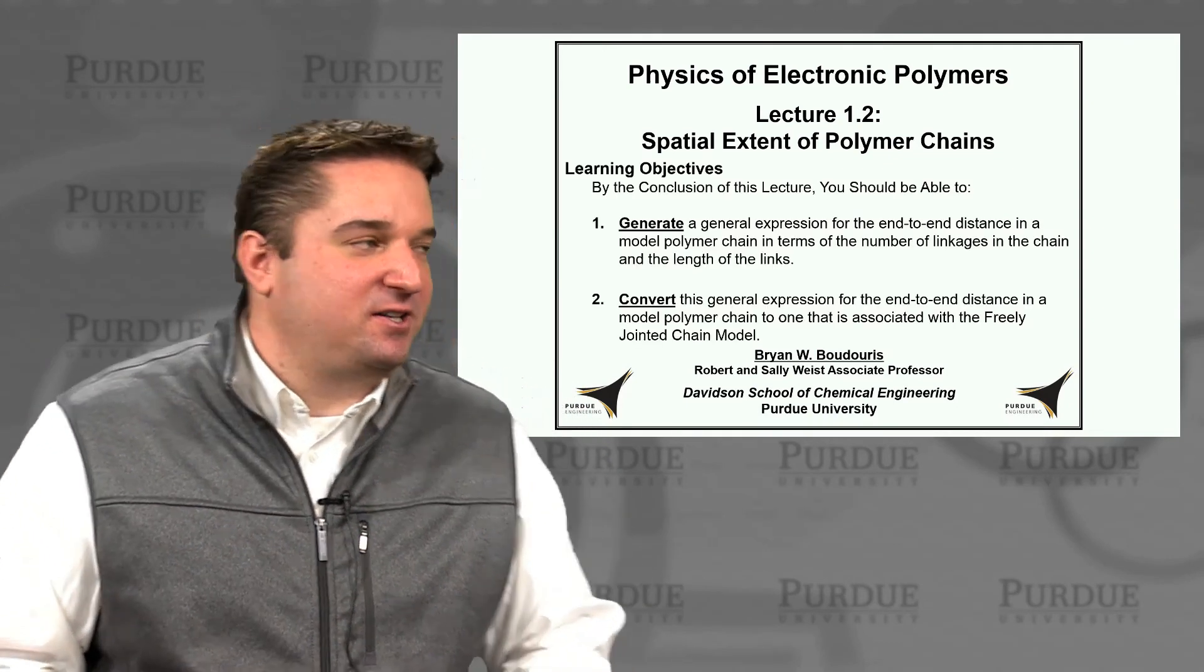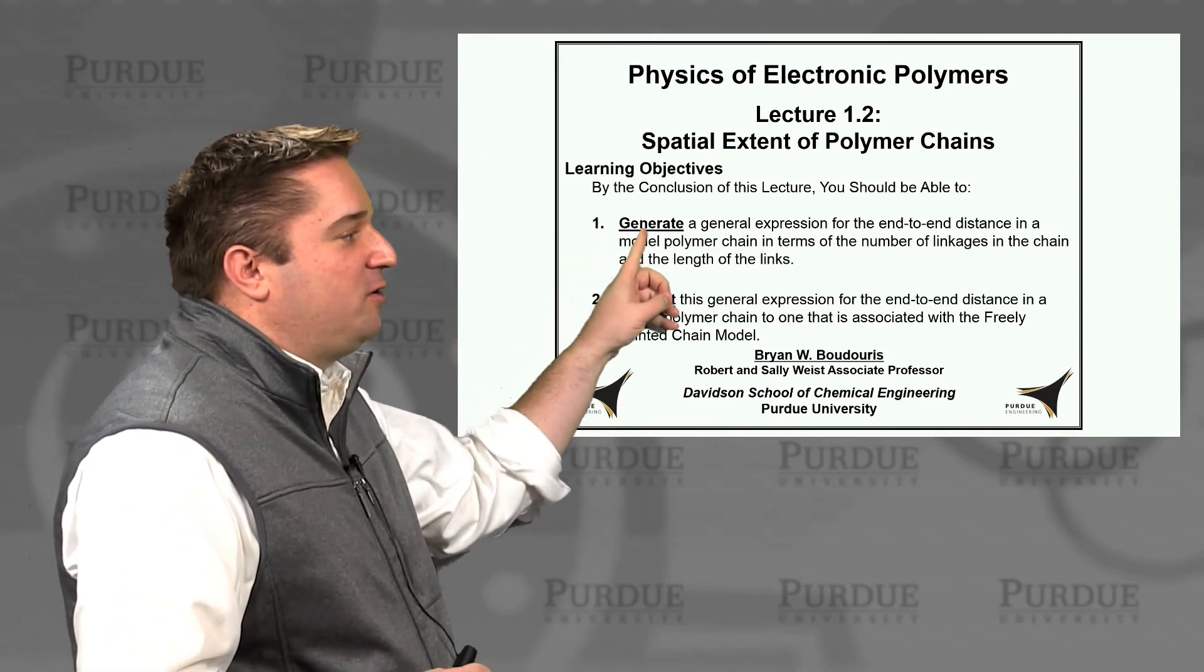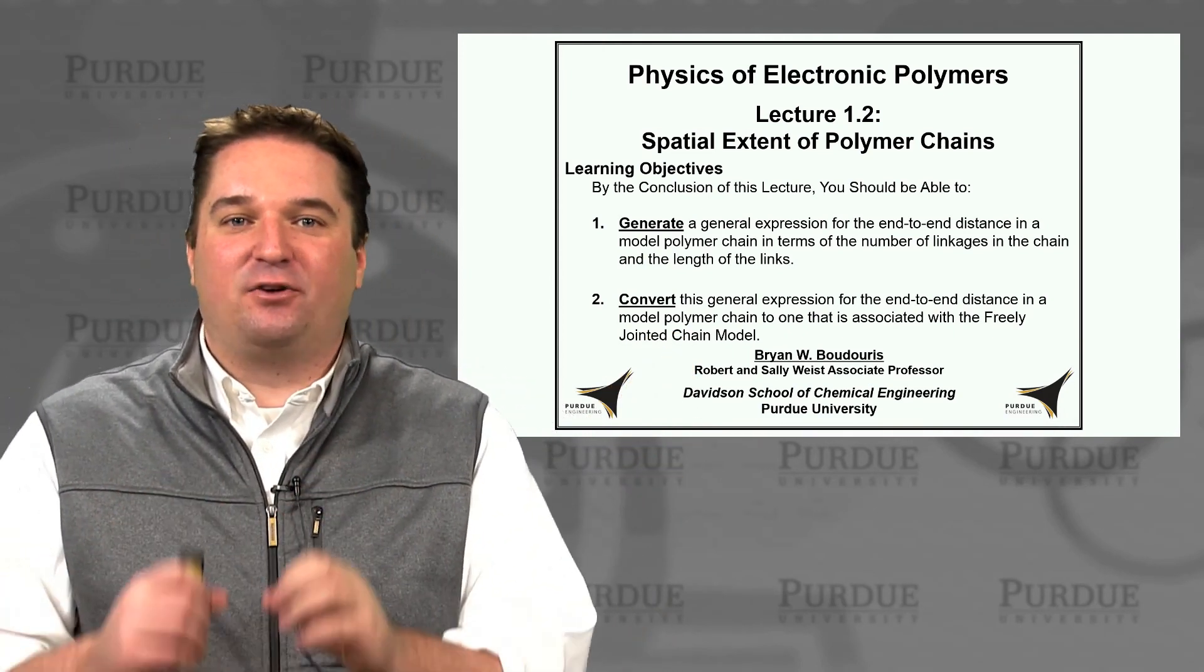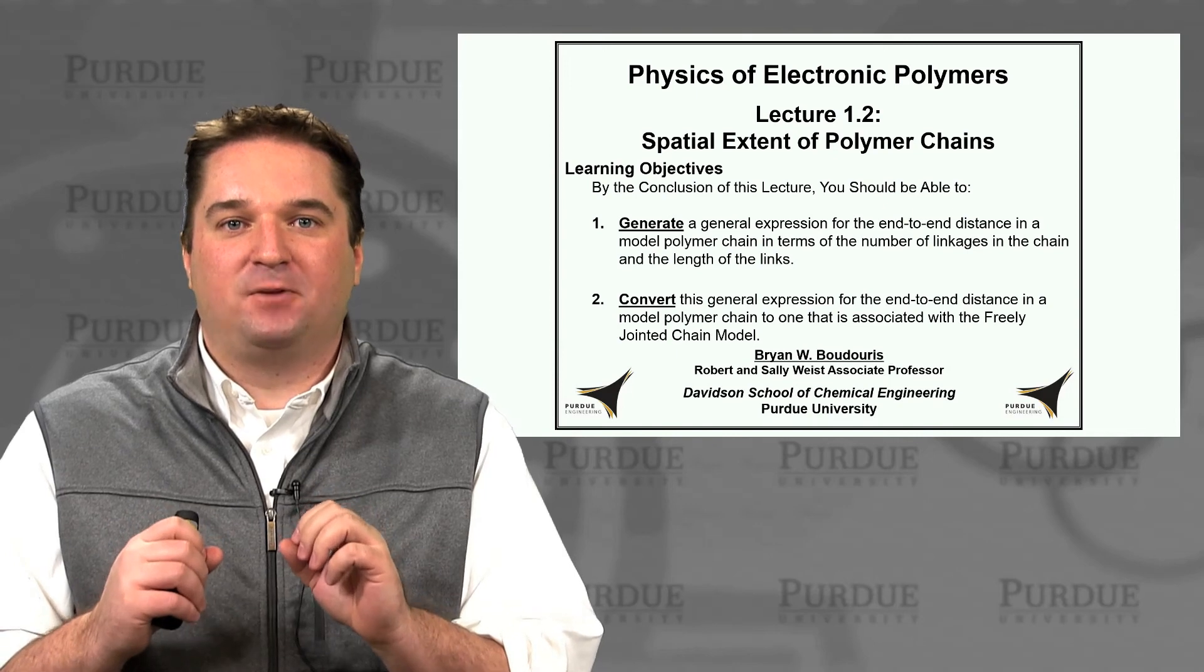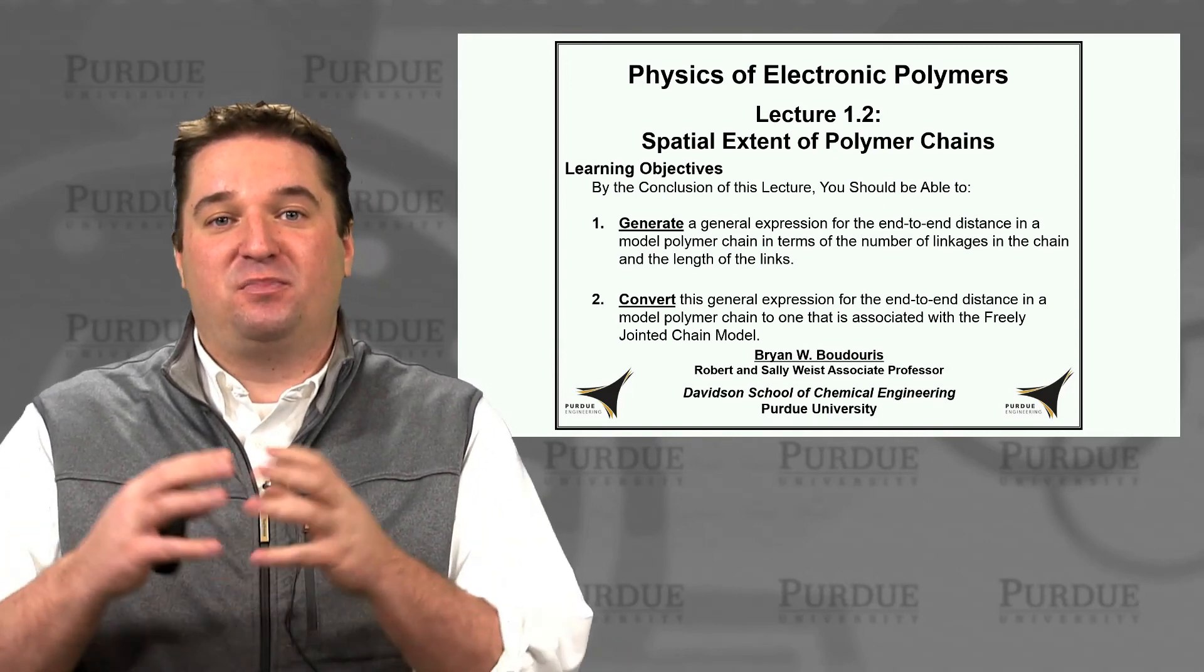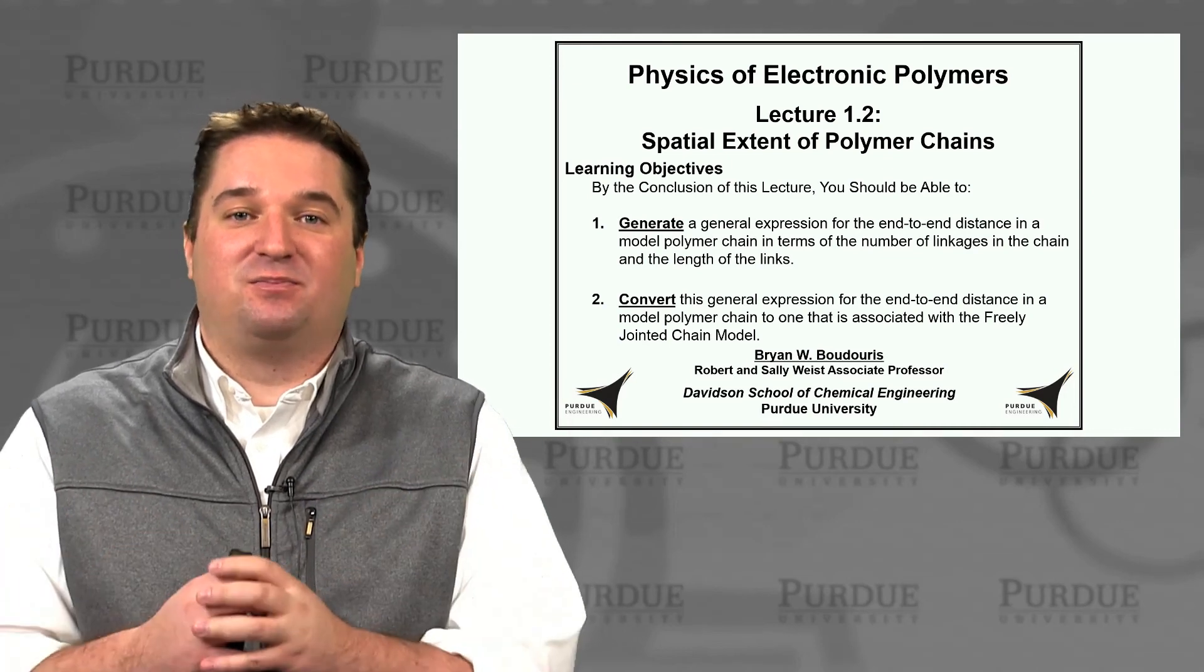At the end of this lecture we'd like to have two things covered. First, we want to be able to generate a general expression for the end-to-end distance of a very model polymer chain. Now this model is very simple in nature but it will allow us to build towards more realistic models in the future.